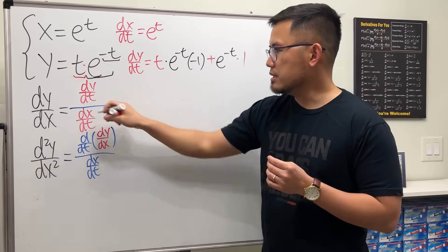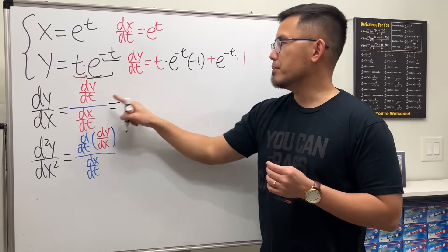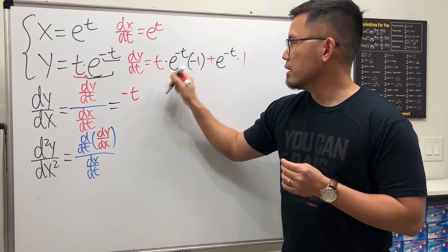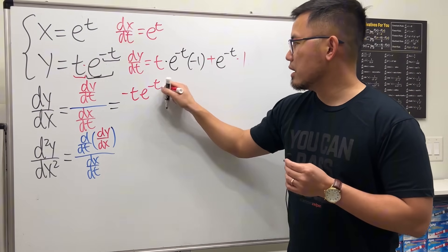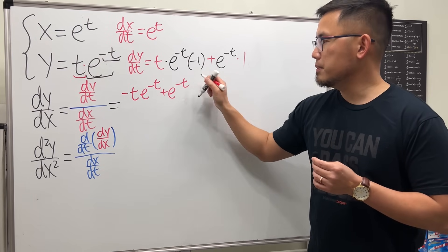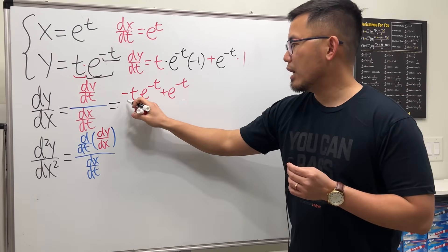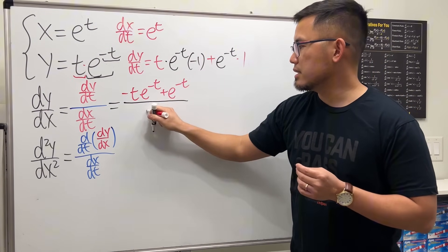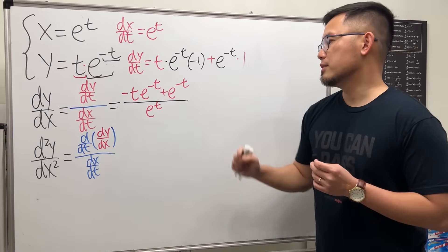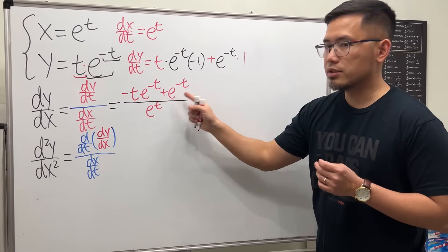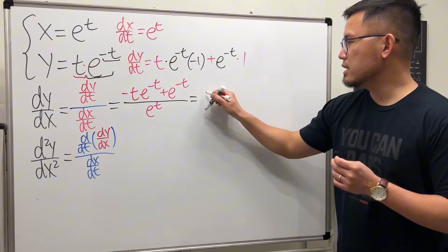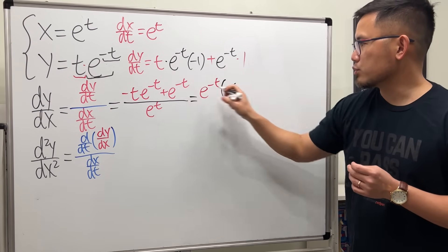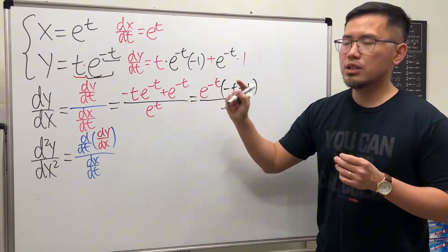Now all we have to do for dy/dx is put dy/dt on the top, which is all of that. So I'm going to write it as negative t·e to the negative t plus e to the negative t. After that, I divide by dx/dt, which is e to the t.